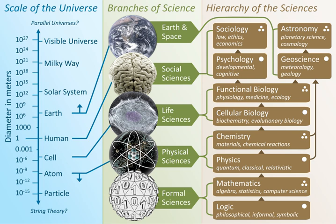Natural sciences: the study of natural phenomena including cosmological, geological, chemical, and biological factors of the universe. Social sciences: the study of human behavior and societies. Natural and social sciences are empirical sciences, meaning that the knowledge must be based on observable phenomena and must be capable of being verified by other researchers working under the same conditions.